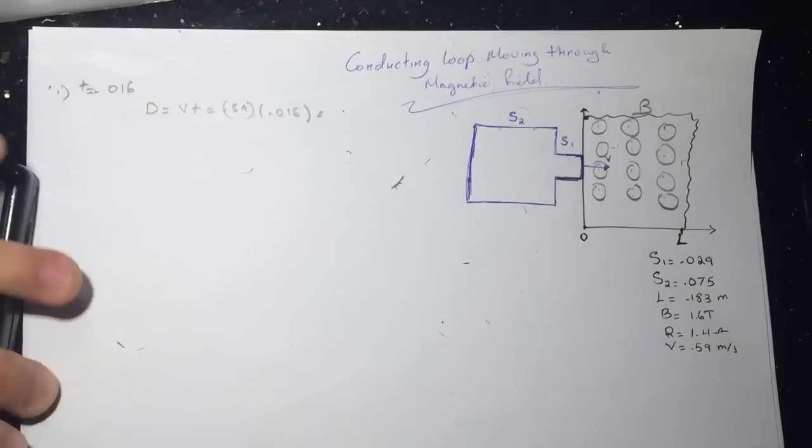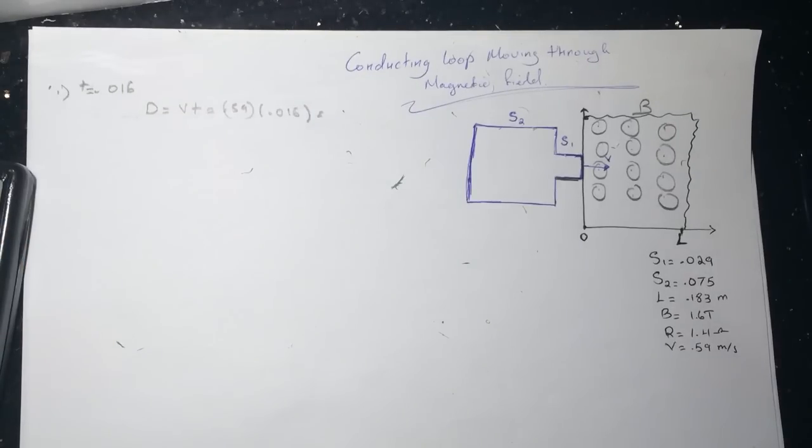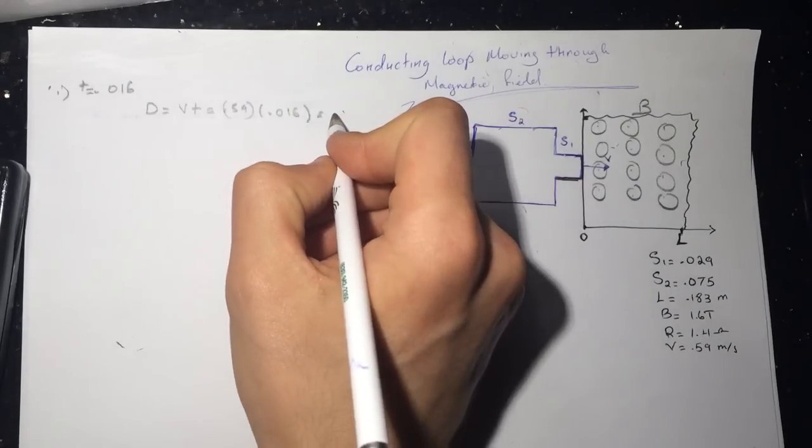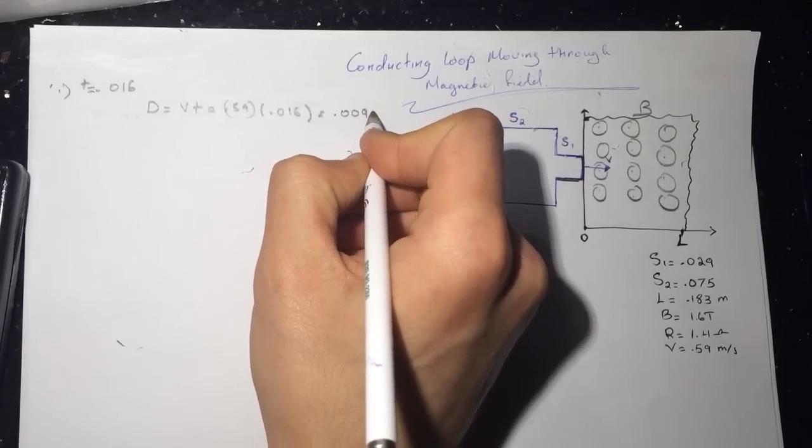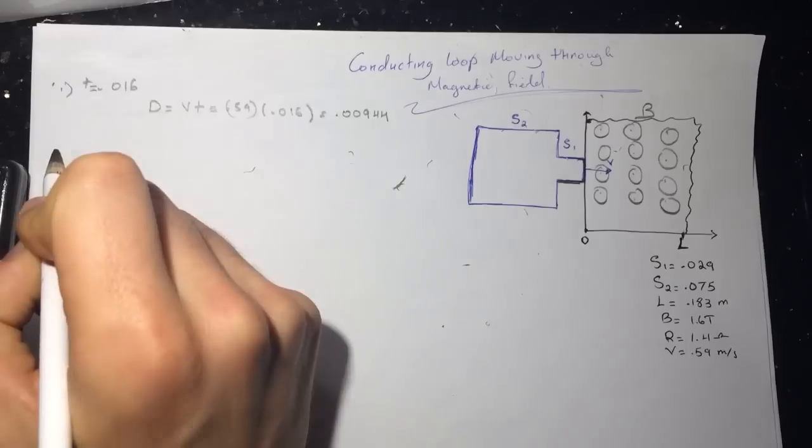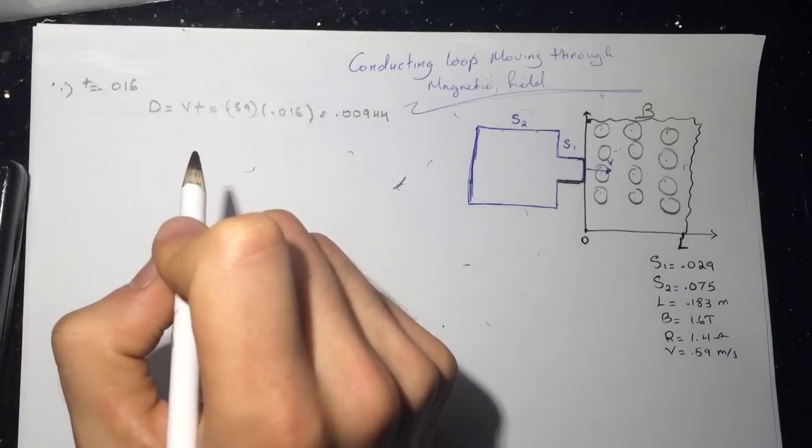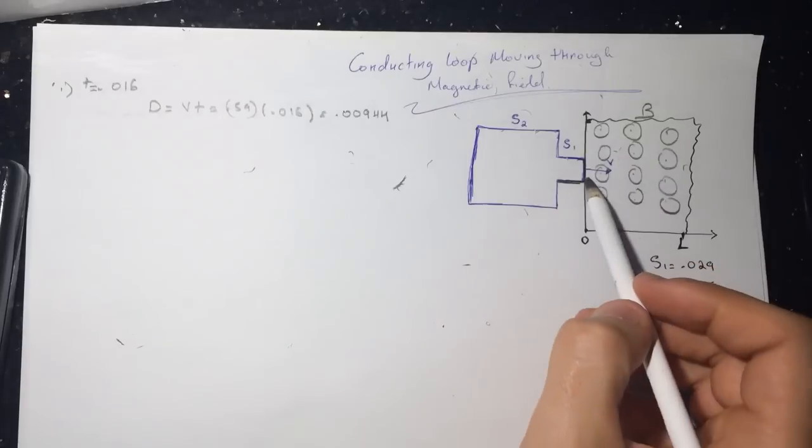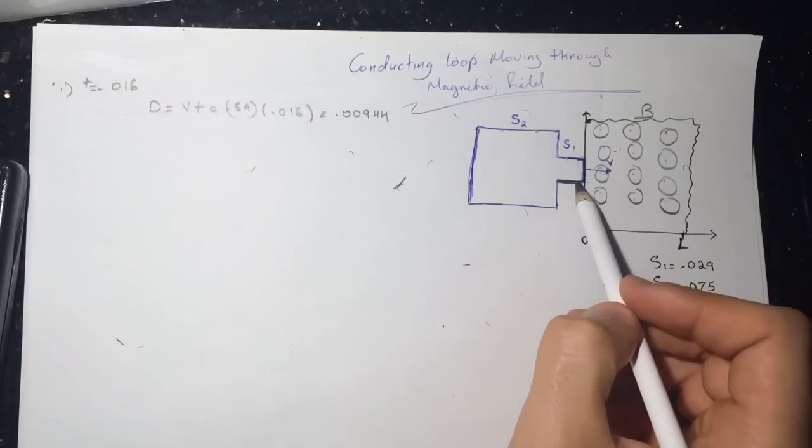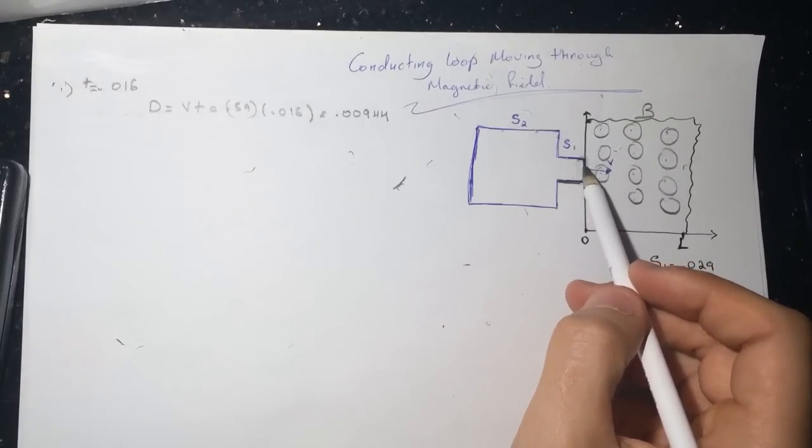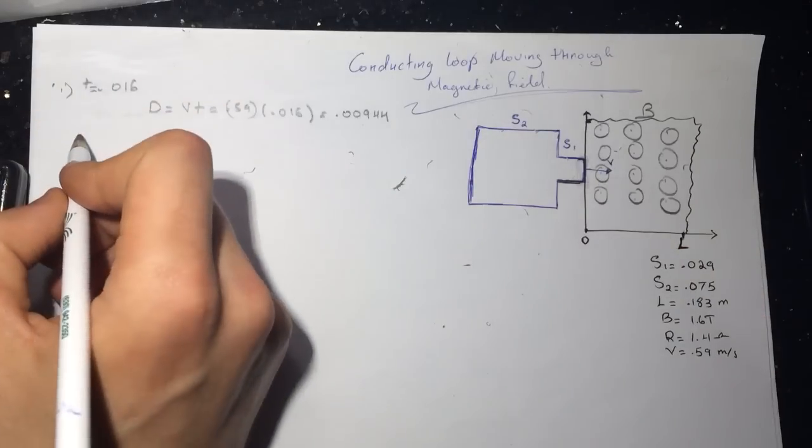And you will get a value, let me use my calculator, 0.59 times 0.016. And you will get a value that is 0.00944.